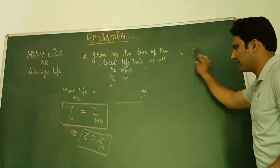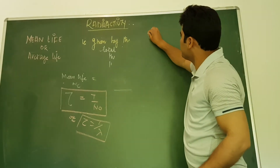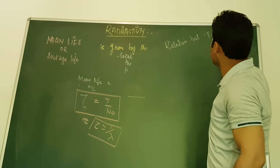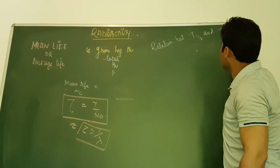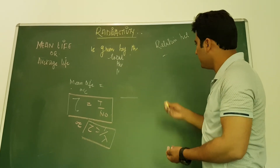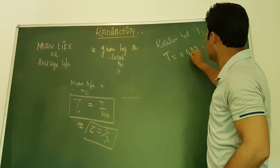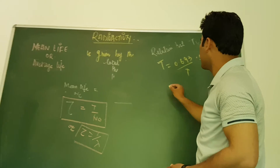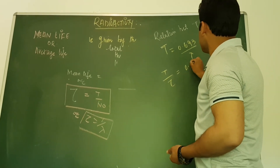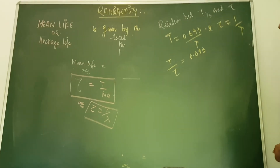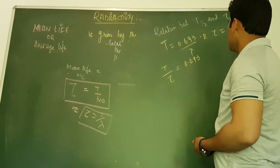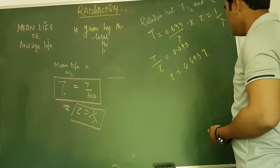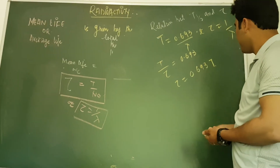Now, what is the relation between half-life T½ and average life tau? We know that T½ equals 0.693 divided by lambda, and tau equals 1 upon lambda. If we divide both, it becomes T½ divided by tau equals 0.693 divided by lambda, and lambda cancels out. So tau equals T½ divided by 0.693.